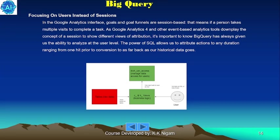One key benefit is focusing on users instead of sessions. In the Google Analytics interface, goals and goal funnels are session-based, meaning if a person takes multiple visits to complete a task, it's difficult to track holistically. As Google Analytics 4 and other event-based analytics tools downplay the concept of a session, it's important to know that BigQuery has always given us the ability to analyze at the user level. The power of SQL allows us to attribute actions to users over durations ranging from one hit prior to conversion to as far back as our historical data goes.